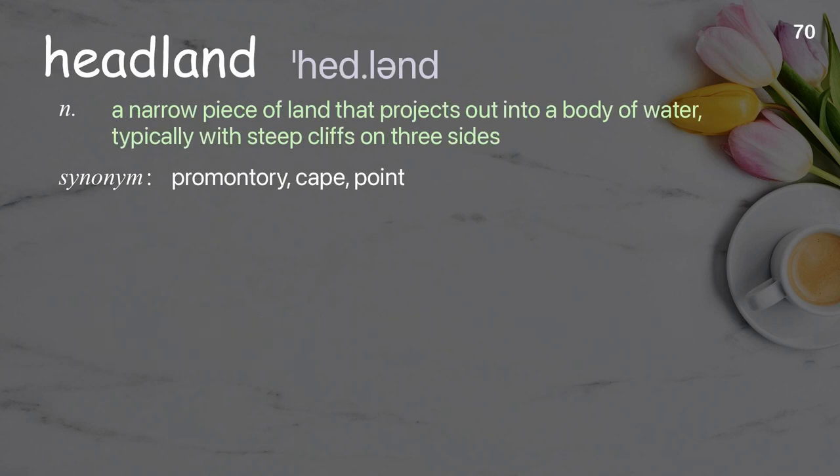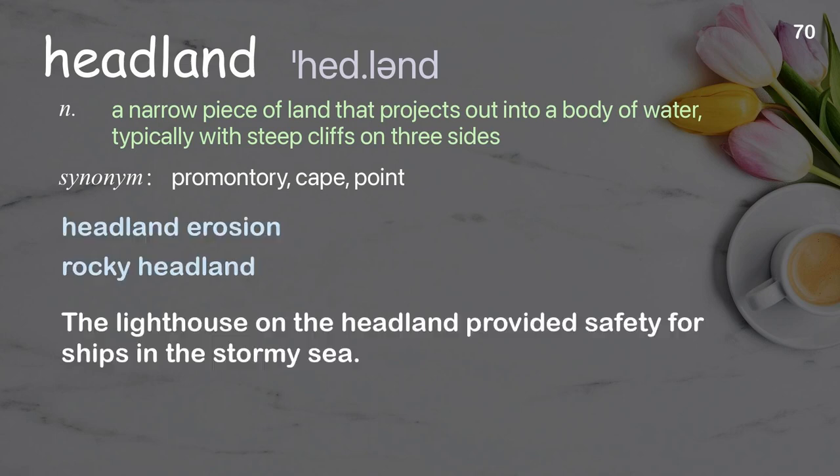Headland: a narrow piece of land that projects out into a body of water, typically with steep cliffs on three sides. Examples: headland erosion. The lighthouse on the headland provided safety for ships in the stormy sea.